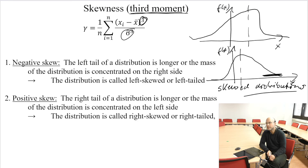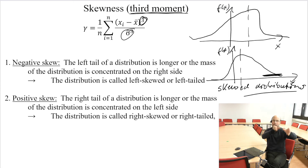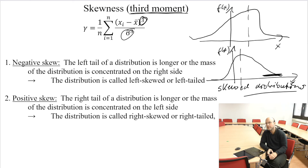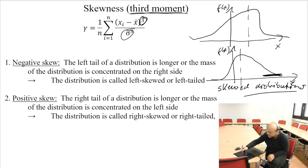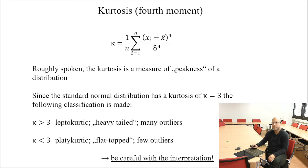If we have a negative skew, the left tail of our distribution is longer and the mass is concentrated on the right. Positive skew means the right tail is longer. This is an interesting property of our random sample — for example, the income distribution in Germany has some very rich people, but the center of mass of incomes is concentrated in the lower parts. The mean income in Germany is roughly about 35,000 euros per year.